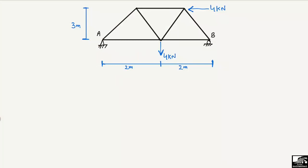Hello guys, welcome back to DC1 Engineering YouTube channel. Please subscribe to our channel for DC1 Engineering videos. In today's lecture, we are going to analyze this truss and find out the support reactions. There is a horizontal load of 4 kilonewtons acting at the top of the truss and a vertical load of 4 kilonewtons acting at the mid of the truss. The vertical height of the truss is 3 meters and the horizontal dimension is 2, 2, and 2 meters.